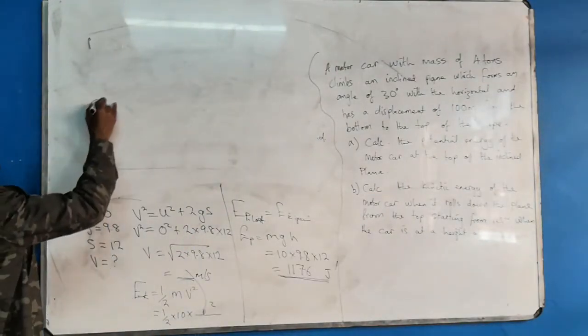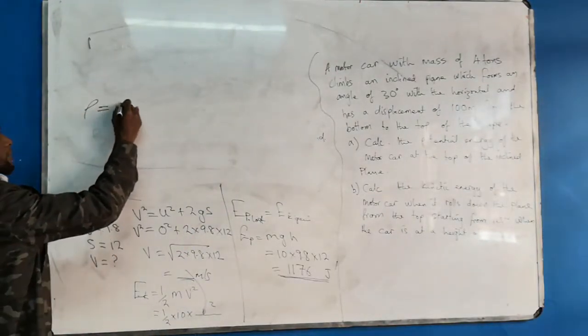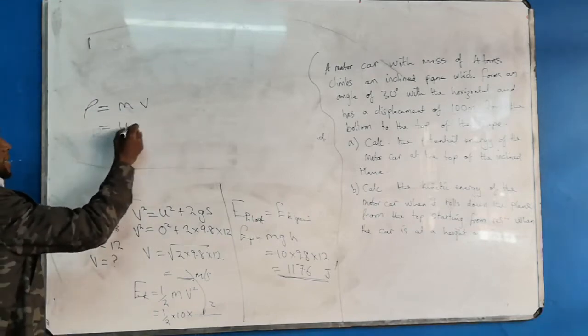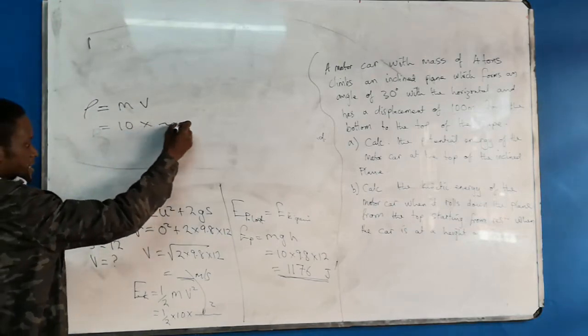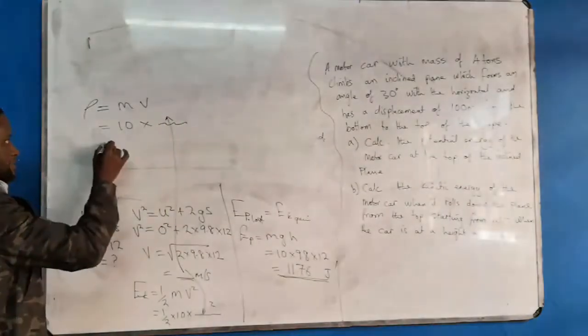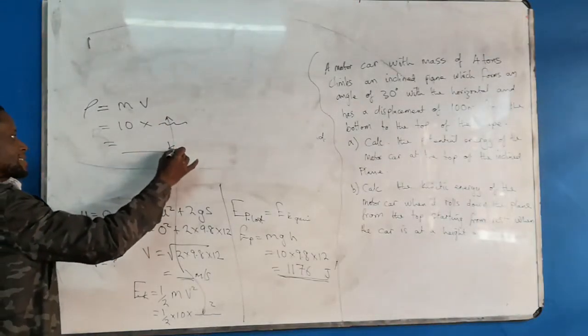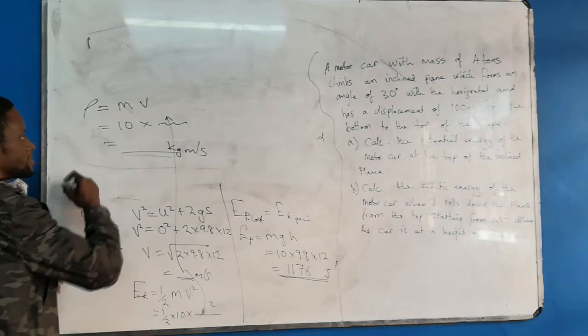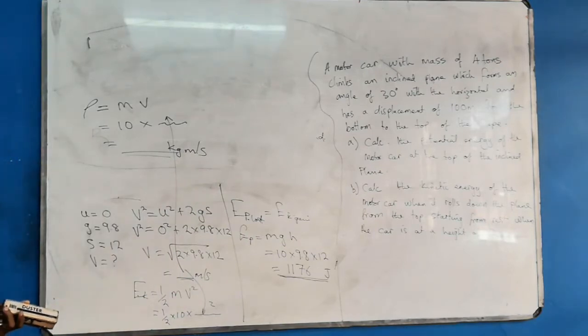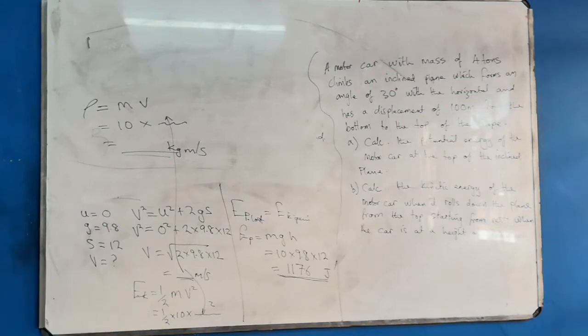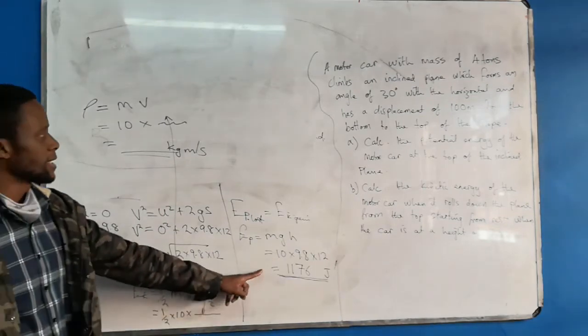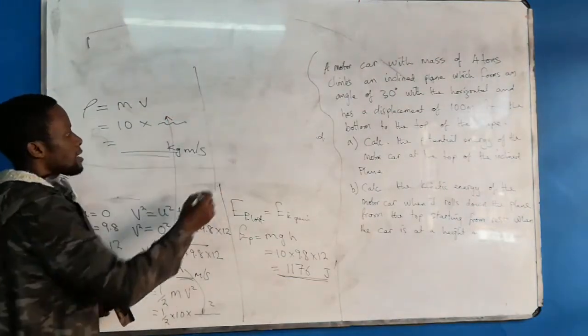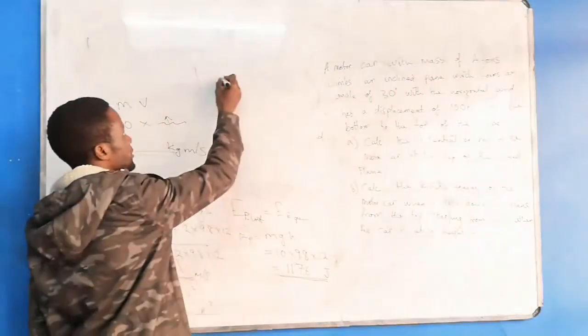Momentum: mass and velocity. Your mass is 10 kg, your velocity this number here, you bring it in. Kilograms meters per second. That is how this one will play out because you have the velocity. But if you had this one, you'll be forced to calculate for the velocity.